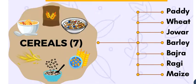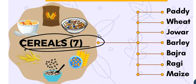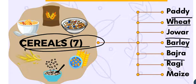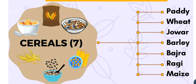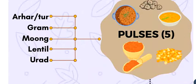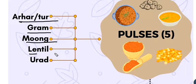Crops covered under MSP include 7 cereals: Paddy, Wheat, Jowar, Barley, Bajra, Ragi, and Maize. And 5 pulses: Arhar/Tur, Gram, Moong, Lentil, and Urid.